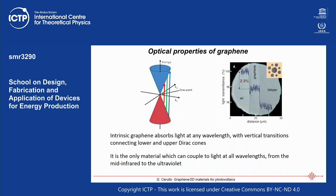Graphene is the only material that can couple to light at all wavelengths from the mid-infrared to the ultraviolet. You might think that thinning a material to a single atomic layer would make absorption negligible, but the absorption of graphene is constant at 2.3%. While not very high in absolute terms, it demonstrates a very strong light-matter interaction for a single atomic layer. Graphene thus displays a universal absorption of 2.3% per layer across this range.